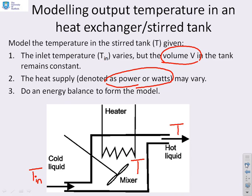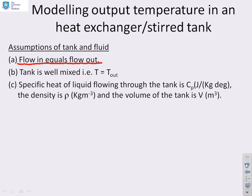The most important thing is that you recognise where the variables pertain. So here we have T_in, the temperature of the liquid coming in, T the temperature in the tank and the temperature going out — we assume that the tank is well mixed so the temperature in the tank is the same as the output temperature. We will assume we know the specific heat of the liquid, written as joules per kilogram per degree. We will assume we know the density of the liquid, rho, in kilograms per metre cubed, and we will assume we know the volume of the tank, V, in metres cubed.